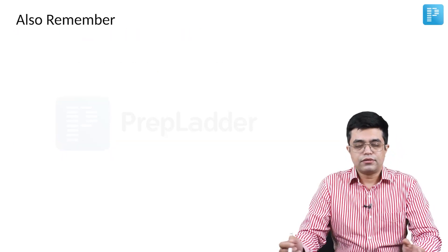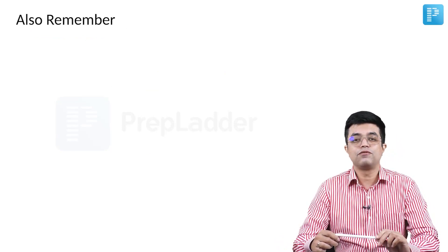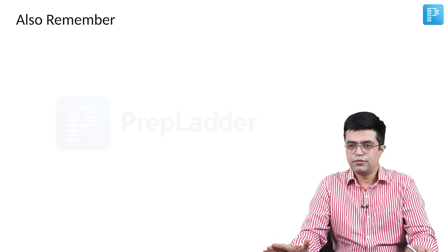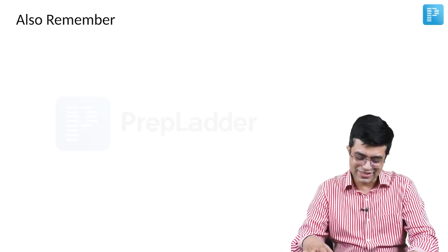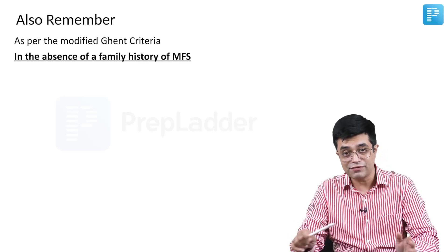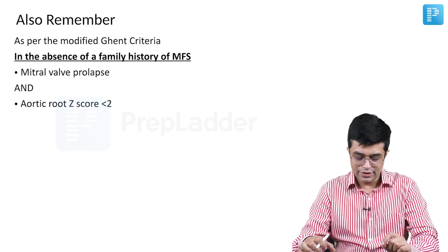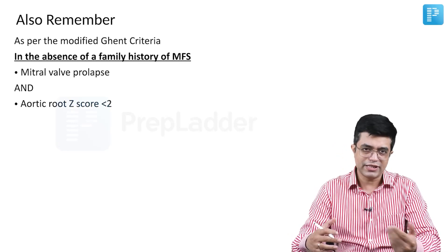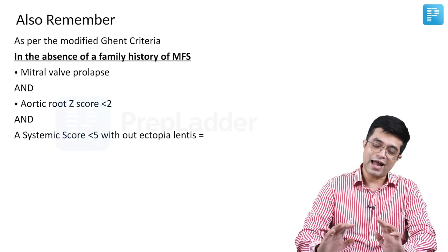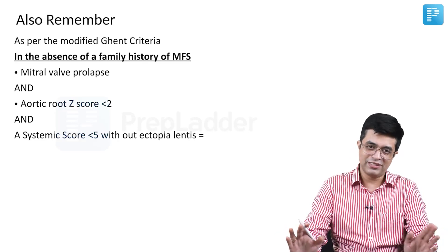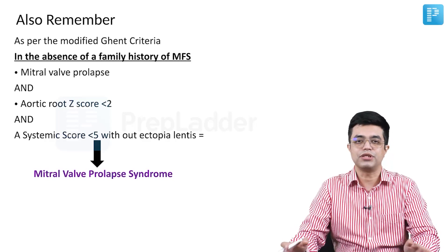Finally, there is MVP syndrome — mitral valve prolapse syndrome — which is not associated with Marfan syndrome. As per the modified Ghent criteria, in the absence of a family history of Marfan syndrome, if the patient has MVP with aortic root Z-score less than 2, systemic score less than 5, and no ectopia lentis — with everything else ruled out — the likely diagnosis is MVP syndrome.